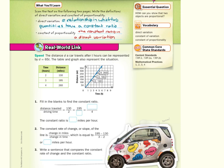Fill in the blanks to find the constant ratio. Well, 130 over 2, which is 130 over 2, equals 195, which is here and here. That would be over 3. And then what is over the 4? Well, 260. And if we were to simplify all of these down, 130 divided by 2, 195 divided by 3 and 260 divided by 4, they all simplify into 65 miles per hour.